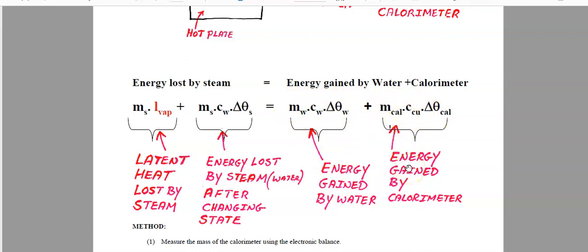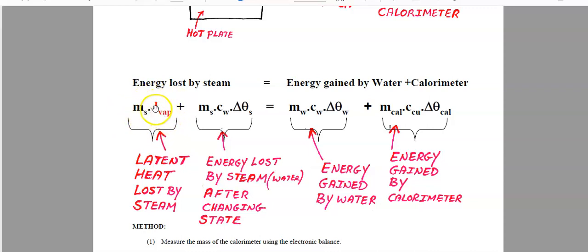That will have to equal the energy lost by the steam, because if something loses energy, something else has to gain the equivalent amount. Now, the energy lost by the steam is actually in two chunks, and it's the second chunk that presents some problems to students. The first chunk is simple: when the steam enters the cold water, it changes from steam (gas) back into water (liquid), losing the energy it had due to being a gas — known as latent heat. The latent heat lost by the steam is calculated as: mass of steam × specific latent heat of vaporization of water.